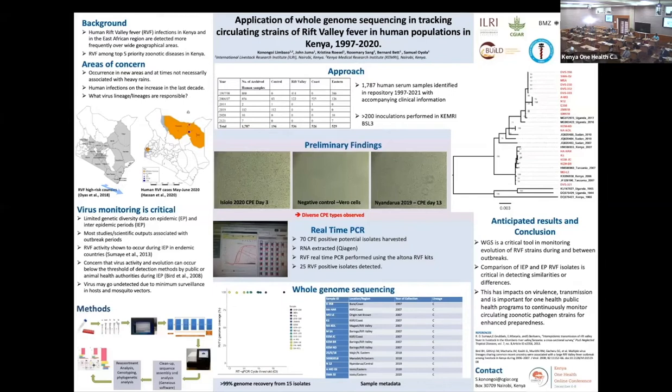Libraries were prepared for the positive RVF samples, and whole genomes were recovered from 15 samples collected in 1997, 2007, 2018, 2019, and 2020 from different regions, as highlighted in the table below.